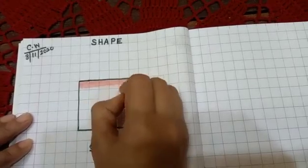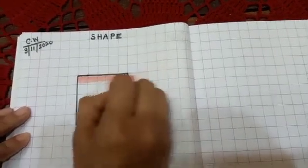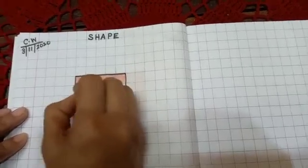So square has four sides and four corners.